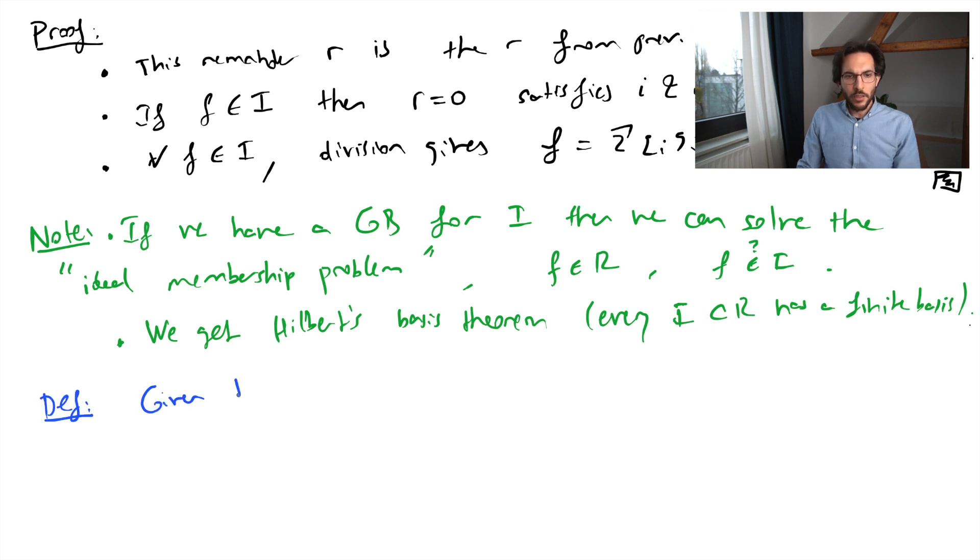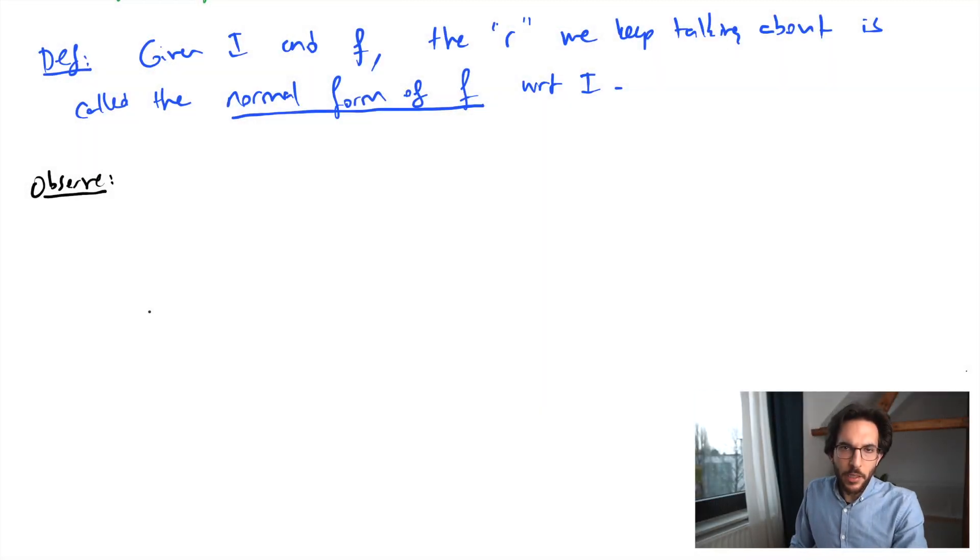So given i and F, the R that we keep talking about, so that's the R satisfying properties i and ii of the proposition above, this is called the normal form of F with respect to the ideal i. And now we can make an observation that we made at the very beginning of our discussion about division, is that dividing things was about finding a canonical representation for the quotients. And let's make this clear.